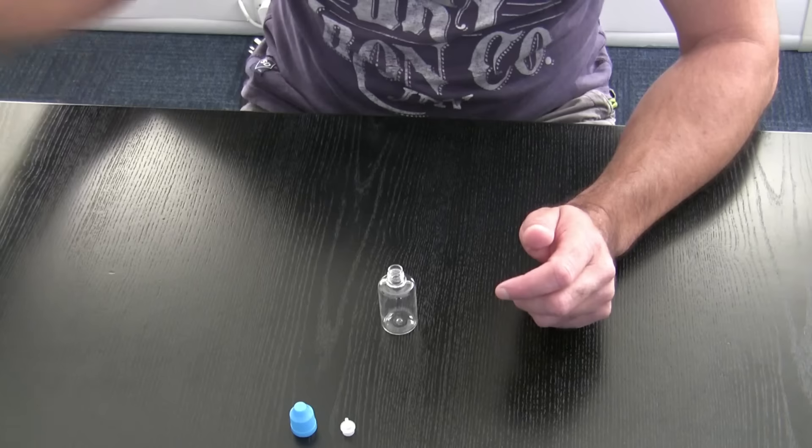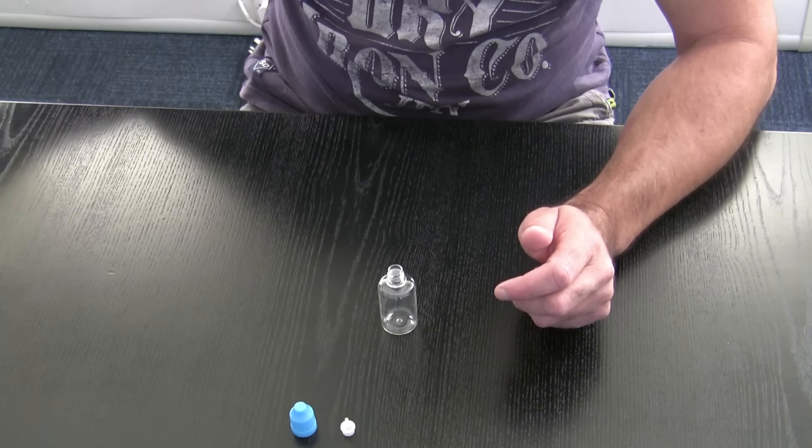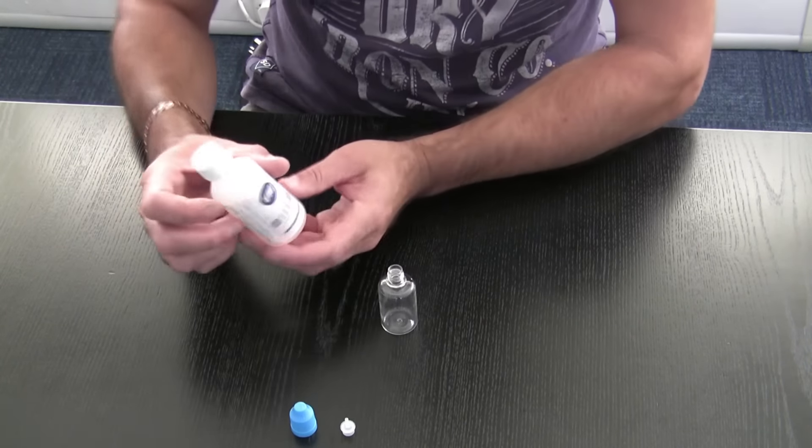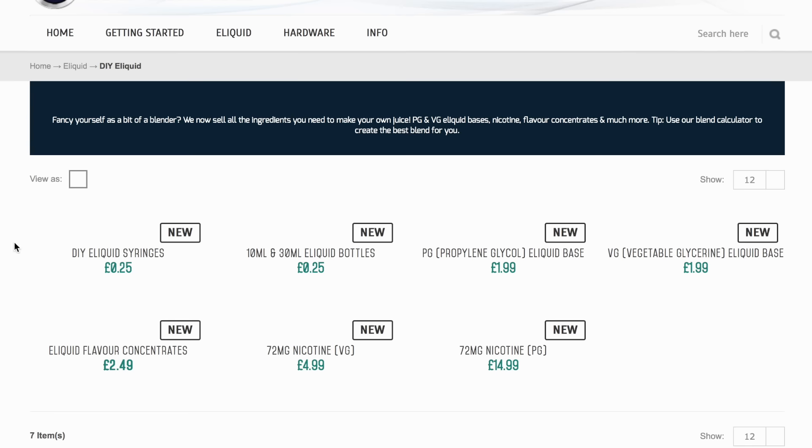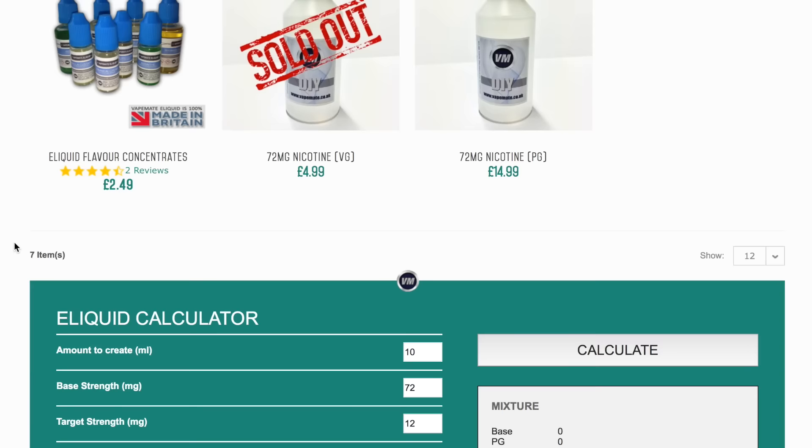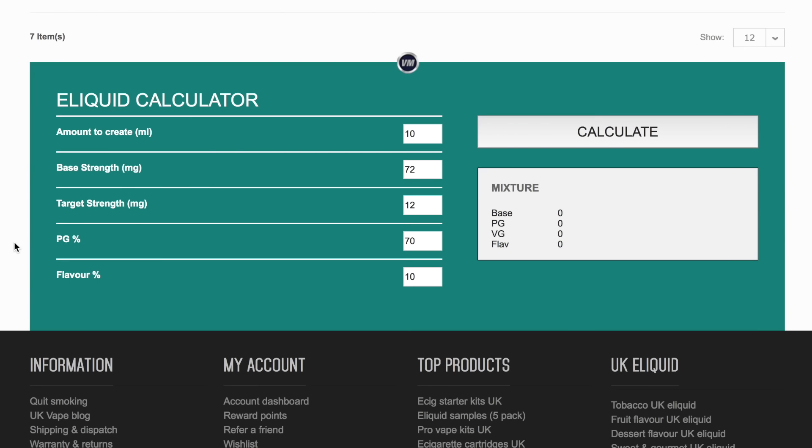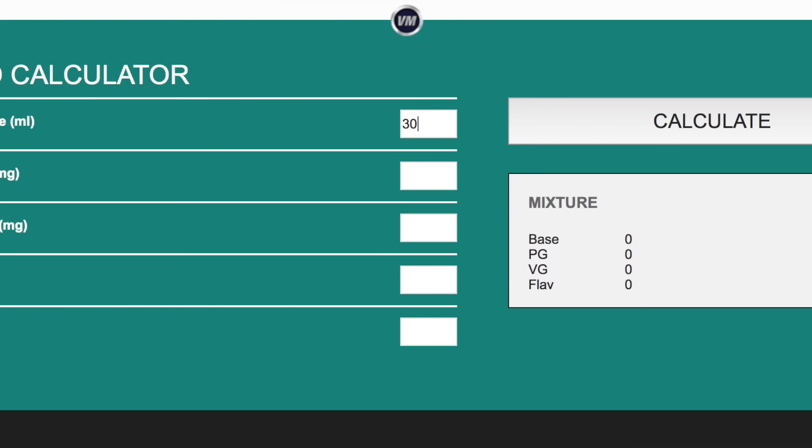We're going to start off by putting in our nicotine. If you go on the website, there is a little calculator on there. You can put in your flavors that you want, the end product that you want, and it will tell you how much you need to put in your bottle. We're going to mix up a standard blend, a 70-30.